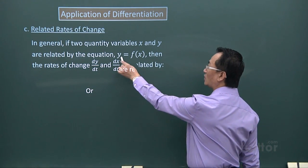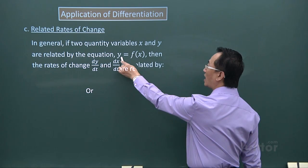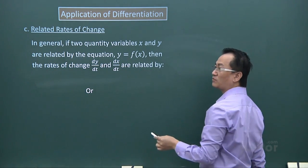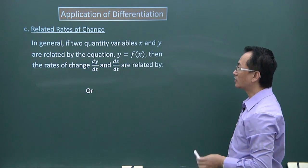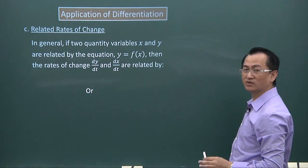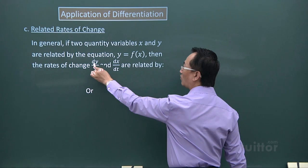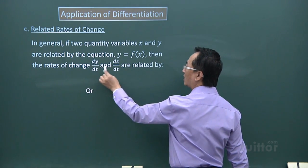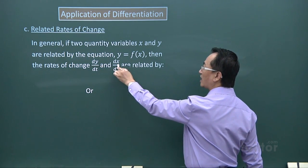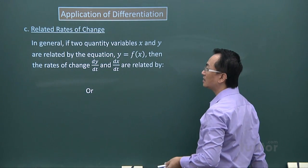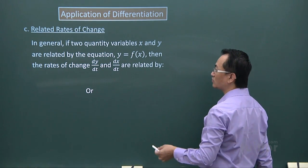Here for simplicity we just keep it to x and y. The equation is related this way: y equals f(x). The two items we want to relate together, one is the rate of change of y and the other is the rate of change of x.